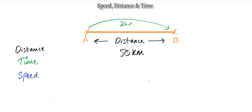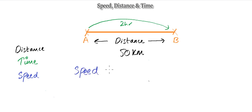The last term is speed — that's the rate at which you travel from point A to point B. How fast am I traveling such that I can cover this 50 kilometers within two hours? That would be my speed, and we can understand this through the formula: speed equals distance divided by time.